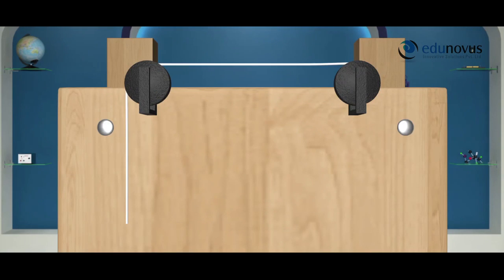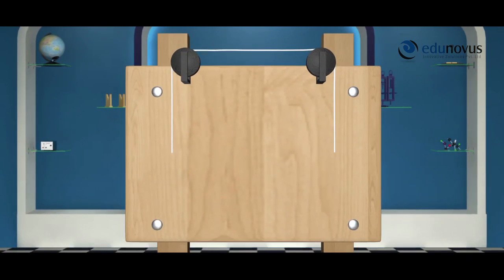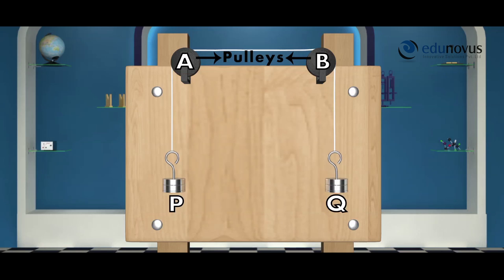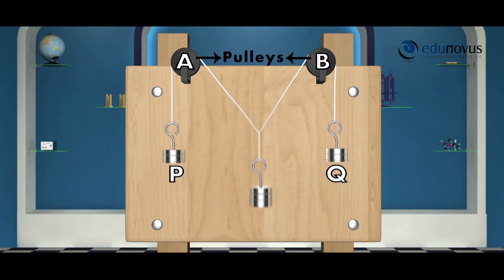Here you can see two pulleys A and B are fixed to a wooden board. Two weight hangers P and Q are attached by a string and passed over the pulleys A and B. A third weight hanger R is attached at a midpoint O of the string. The point O will be in equilibrium under the action of three forces P, Q and R.